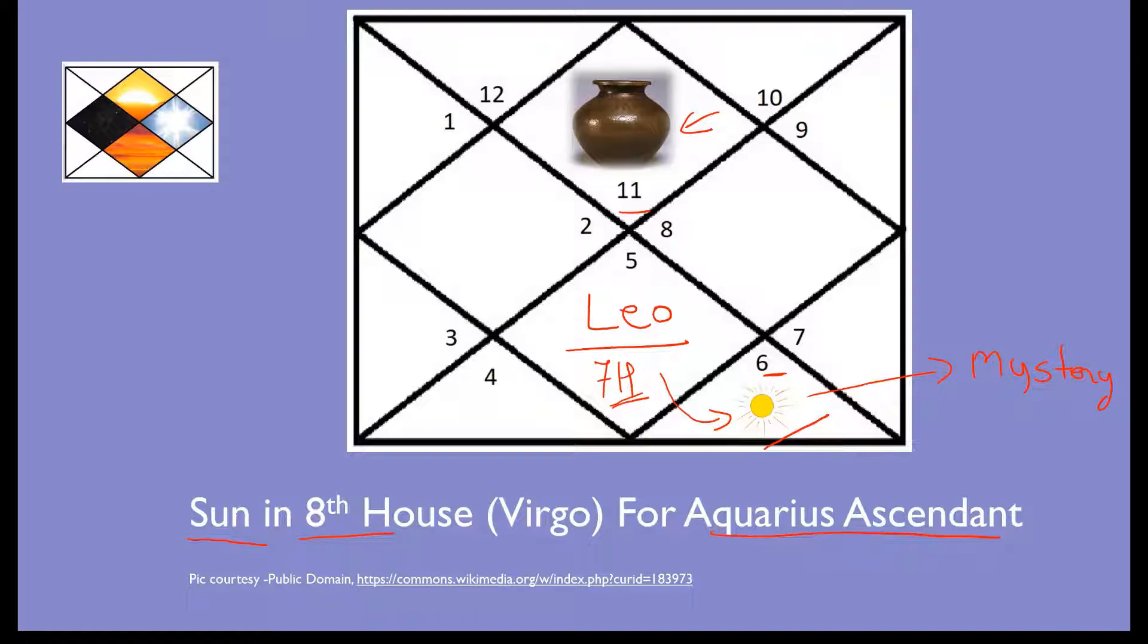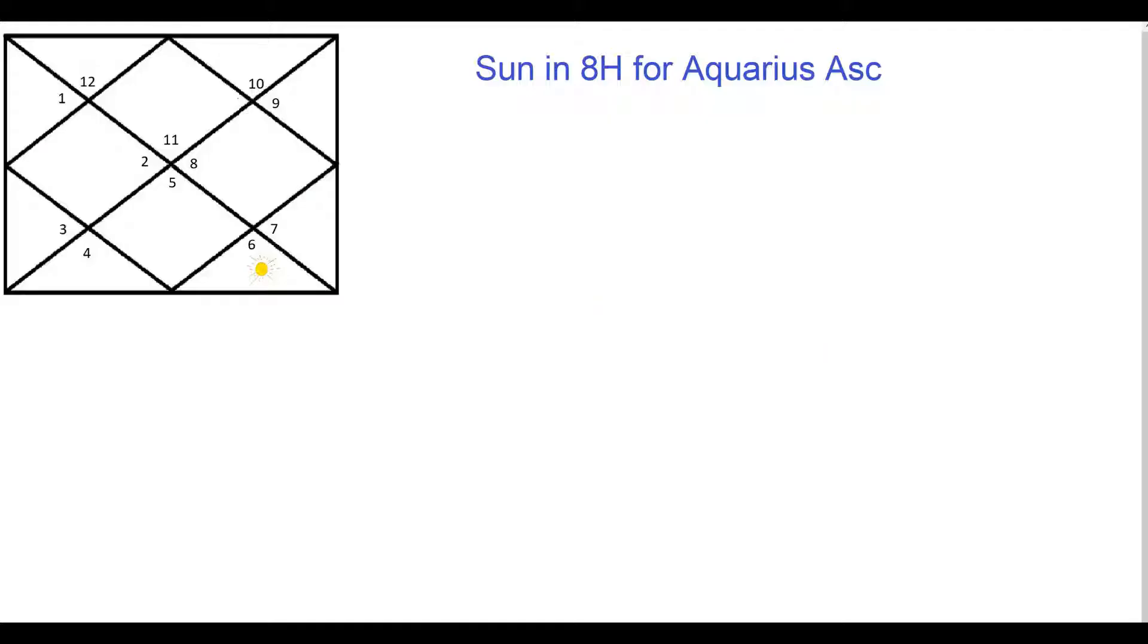In the next few minutes we will try to decode this mysterious placement of Sun. So before we start our analysis let's just see how many houses this placement is going to directly affect. First of all the seventh house because Leo sign is present here which is Sun's own sign, eighth house definitely because Sun is present in the eighth house, and from the eighth house Sun will have a direct aspect on the second house which is the house of your family, family of birth, and property or wealth you accumulate in life.